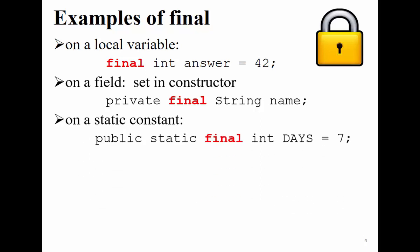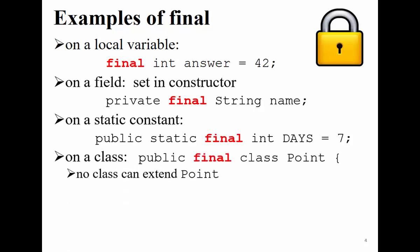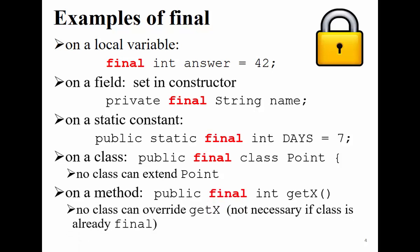If we combine final with static, that means the field is a class-level constant, so whenever you create a new object from your class, all objects share the same copy of this constant. We can also use final with a class — for example, `public final class Point` — meaning you can create objects of that type, but you cannot create a child class from it. You can use final with a method, such as `public final int getX()`, meaning it cannot be overridden in any child class.